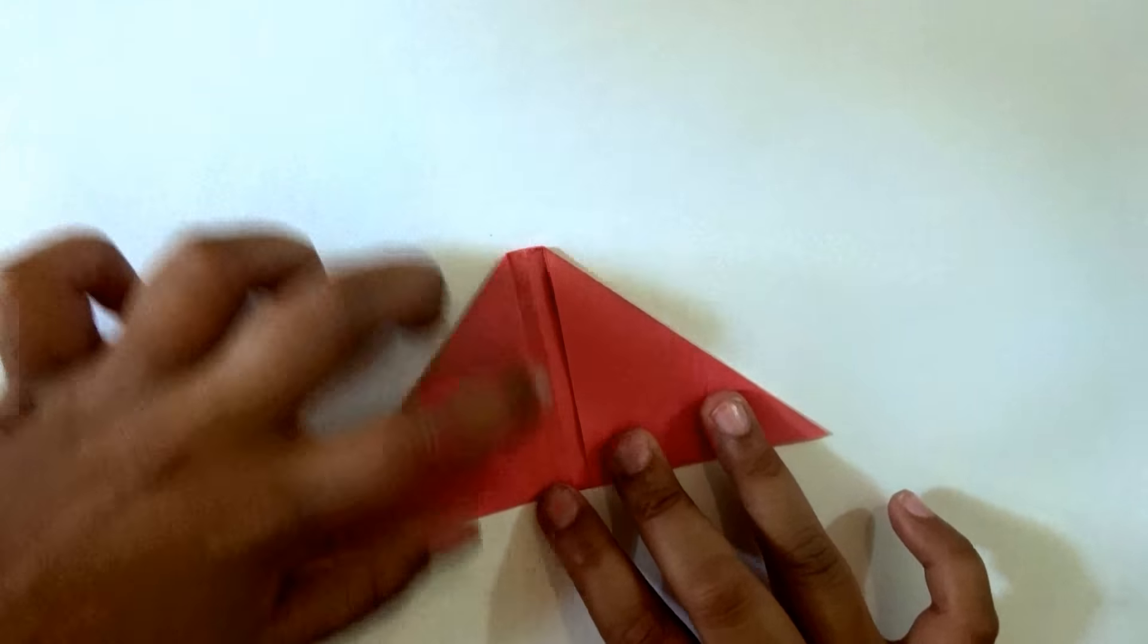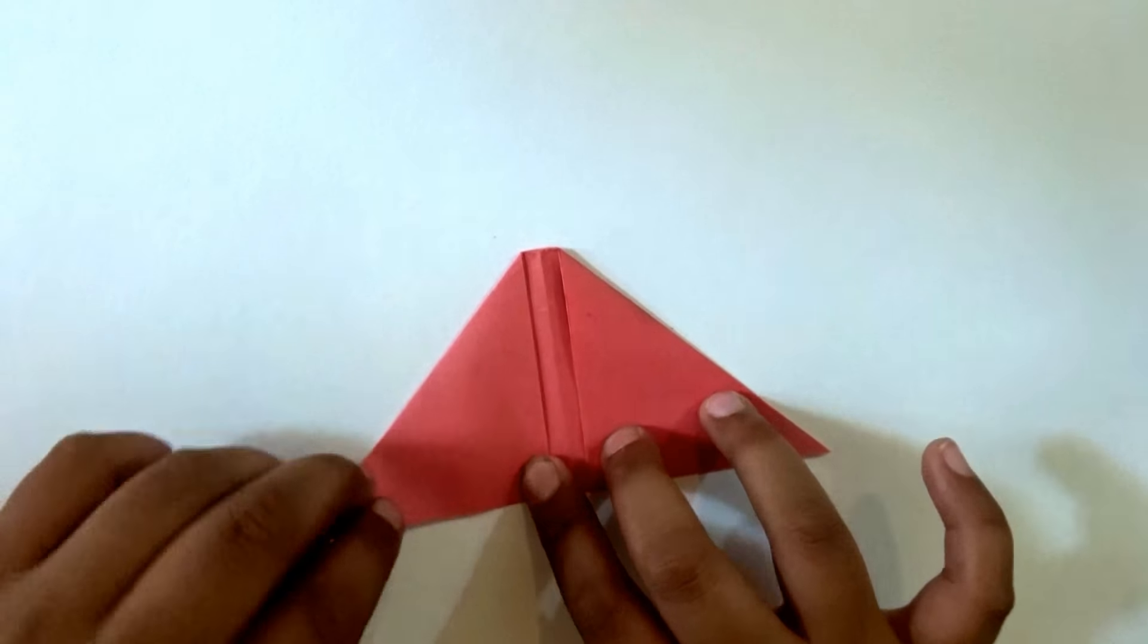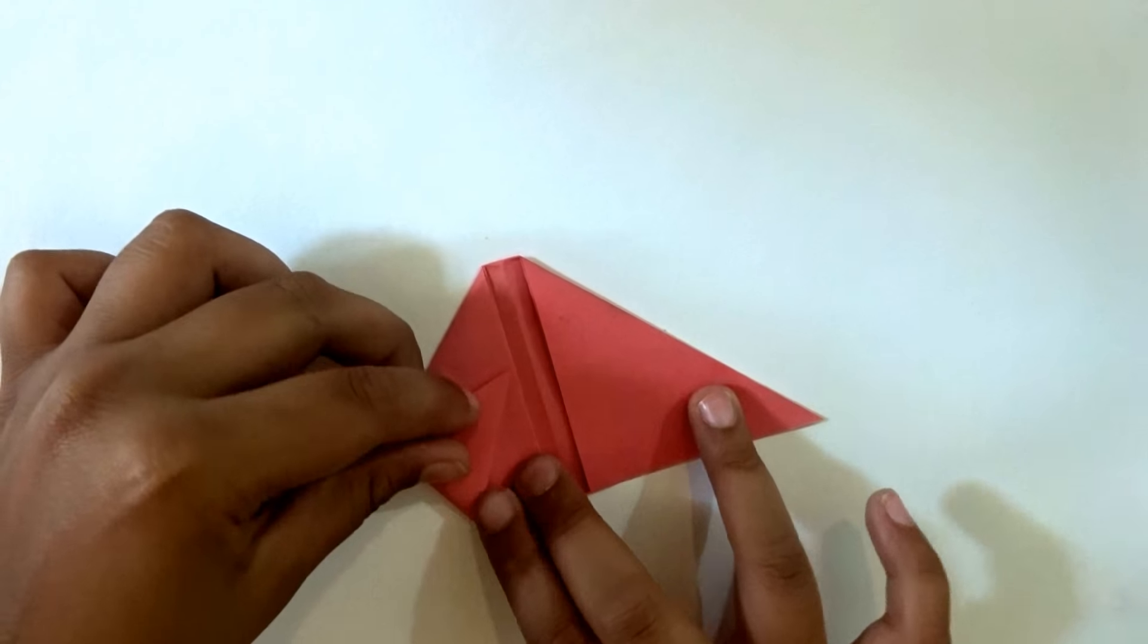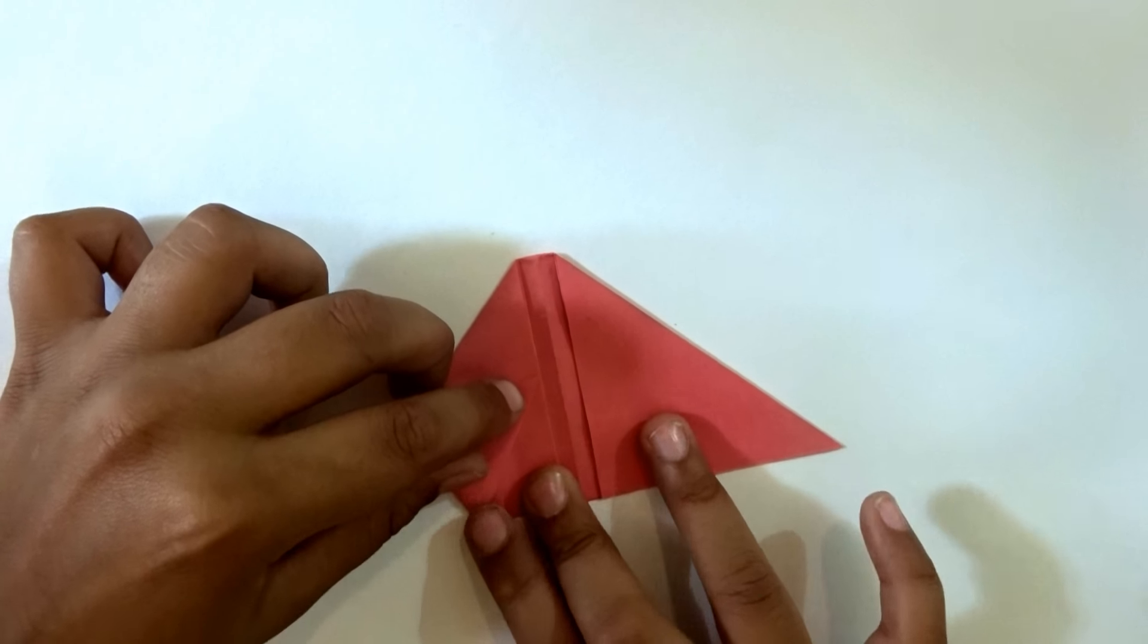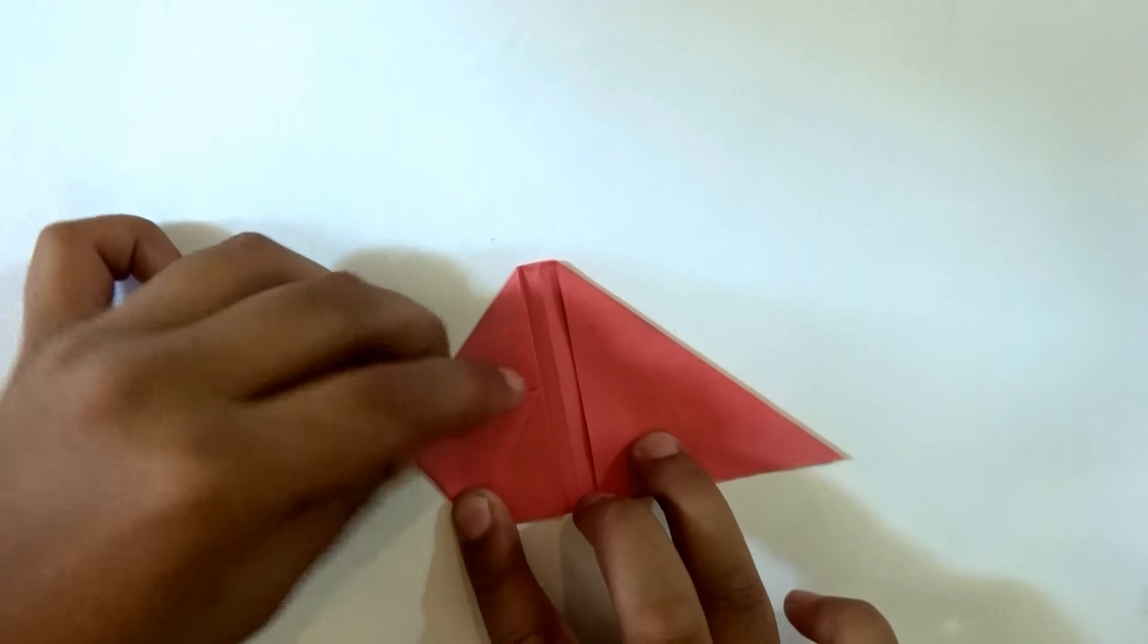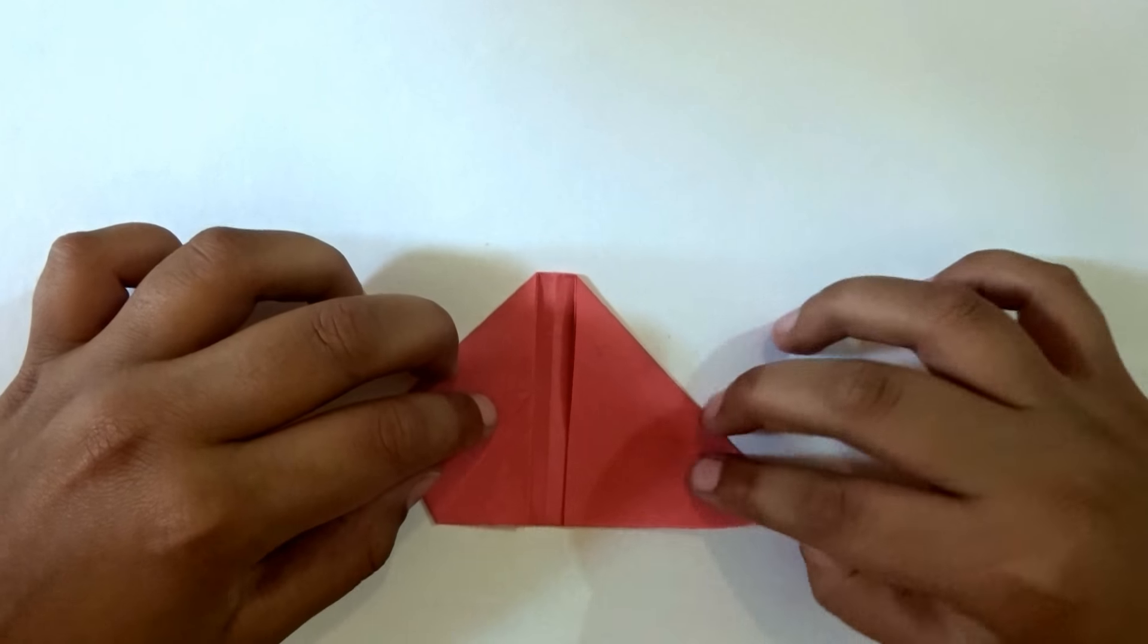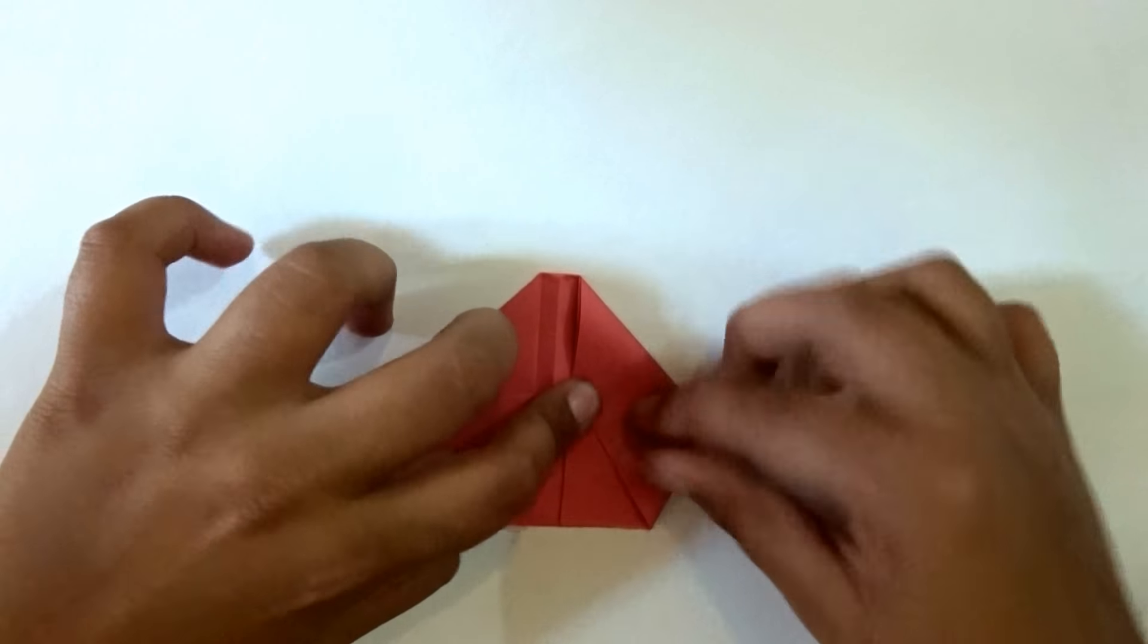Now taking the midpoint of this line, fold this point to the midpoint. Round here. Same on this side.